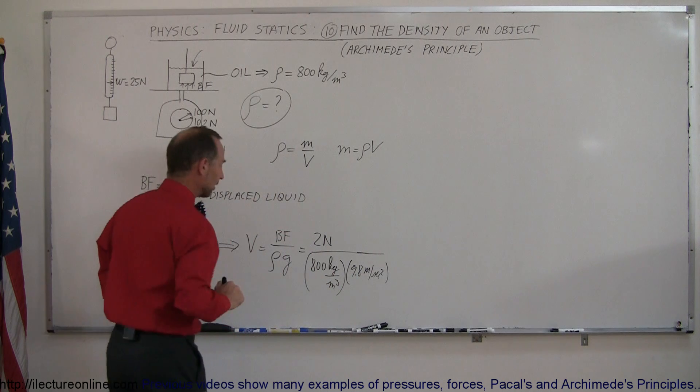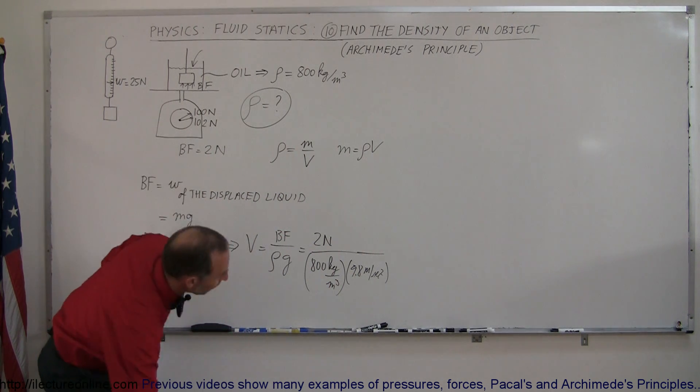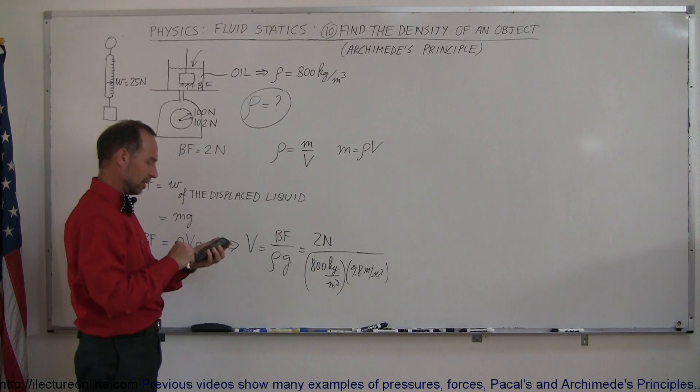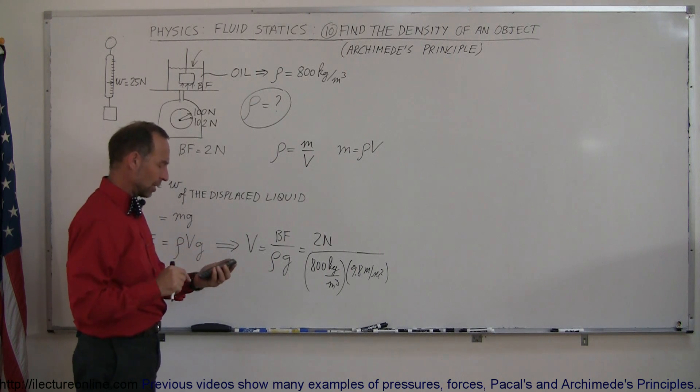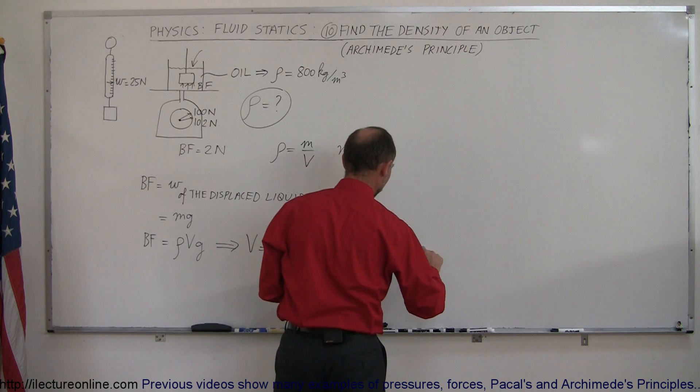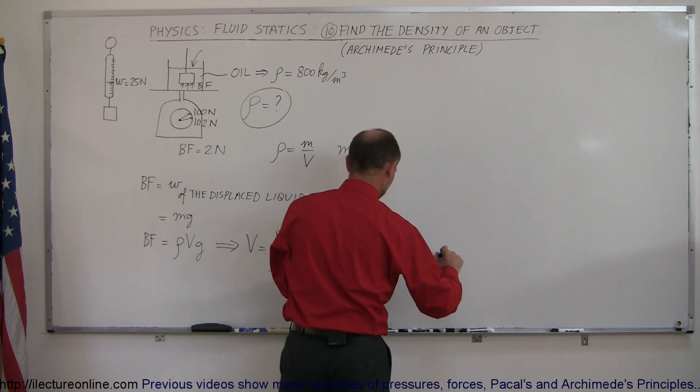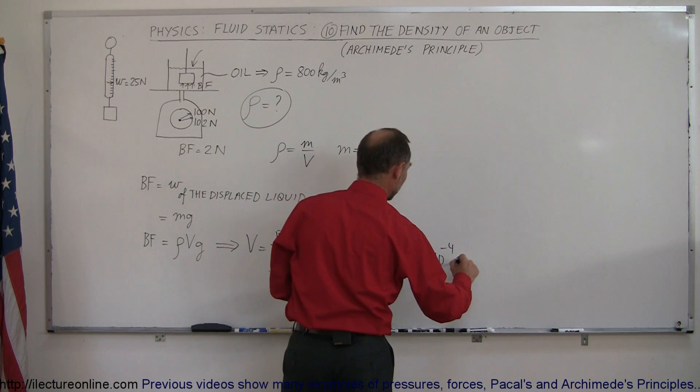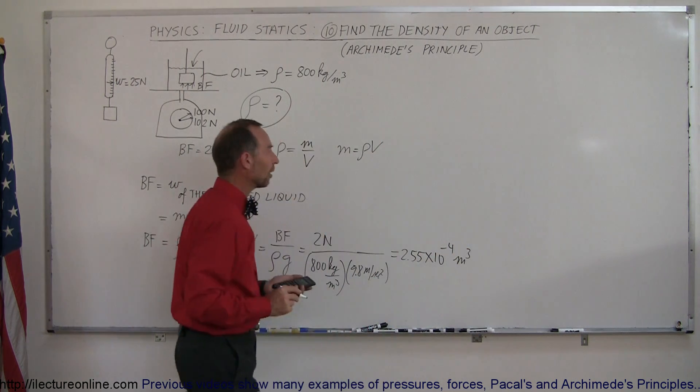And that will give us the volume of the object. So let's figure out what that is. It's 2 divided by 800 divided by 9.8. And we get 2.55 times 10 to the minus 4. And of course, that would be cubic meters because we're finding the volume.